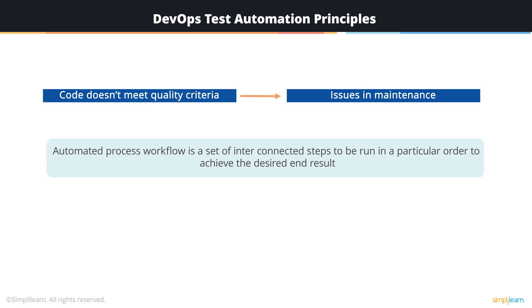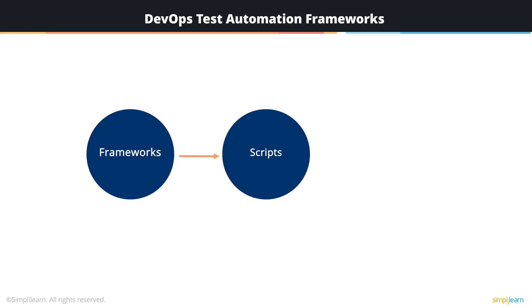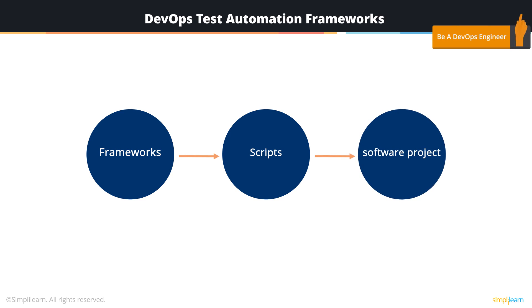An automated process workflow is a series of interconnected steps that run in a particular order to achieve the desired end results. If run on less than desirable quality code, the automated workflow will keep pushing the same code quality into the production environment, or worse, fail at each and every step of your automation workflow, requiring someone in the team to manually monitor it — thus completely negating the purpose of automation in the first place. There are different testing frameworks available in the market for various technologies that can be used at the different stages of the SDLC process. These frameworks allow you to write test scripts for every use case and every functionality that has to be implemented in your software project.